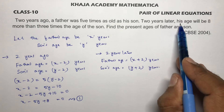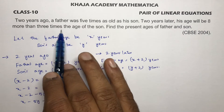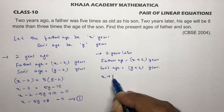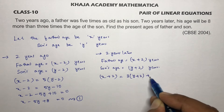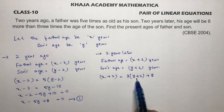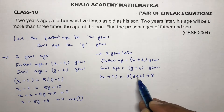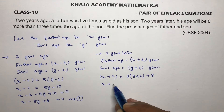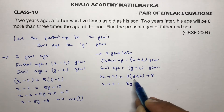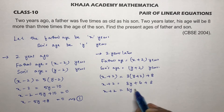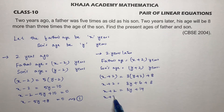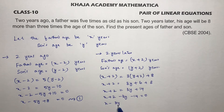Two years later, the father's age will be eight more than three times the age of the son. So x plus two equals three times y plus two, plus eight. Simplifying: x plus two equals three y plus six plus eight, which gives x plus two equals three y plus fourteen. Therefore x minus three y minus twelve equals zero. This is equation two.